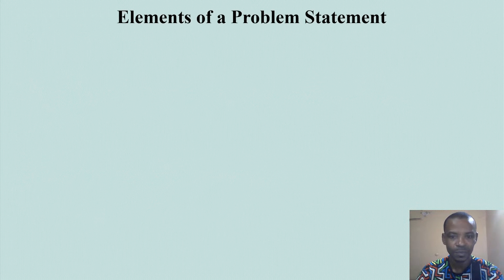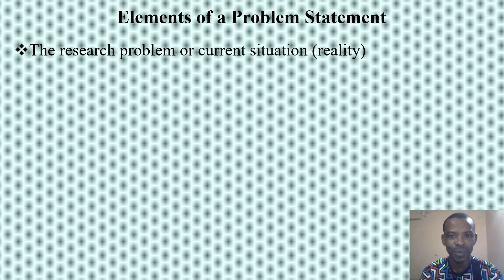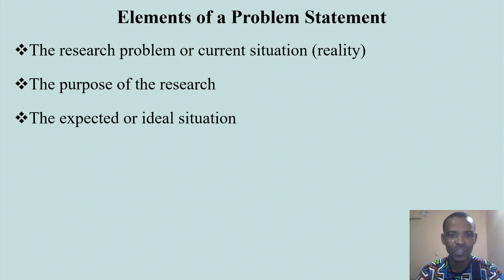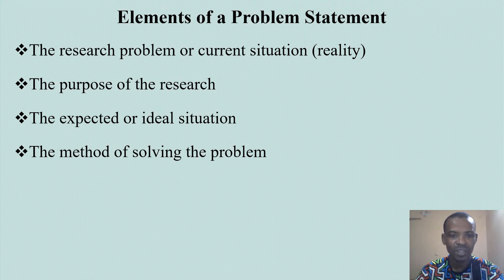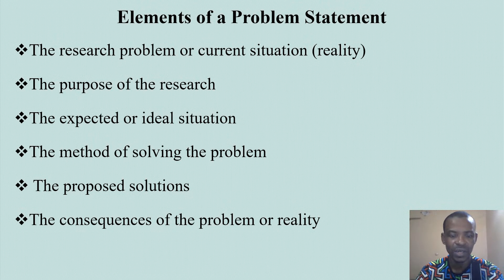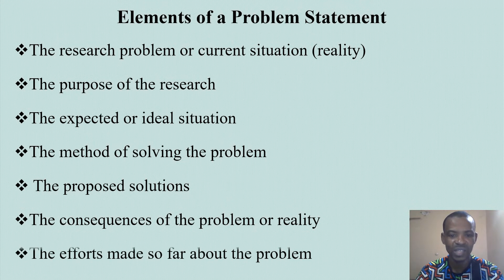The key elements that should be in a statement of the problem include: the research problem which is the current situation, the purpose of the research, the expected or ideal situation, the method for solving the problem, the proposed solutions, the consequences of the problem — which is very important, showing who is affected — and finally, the efforts made in previous literature toward solving that problem.